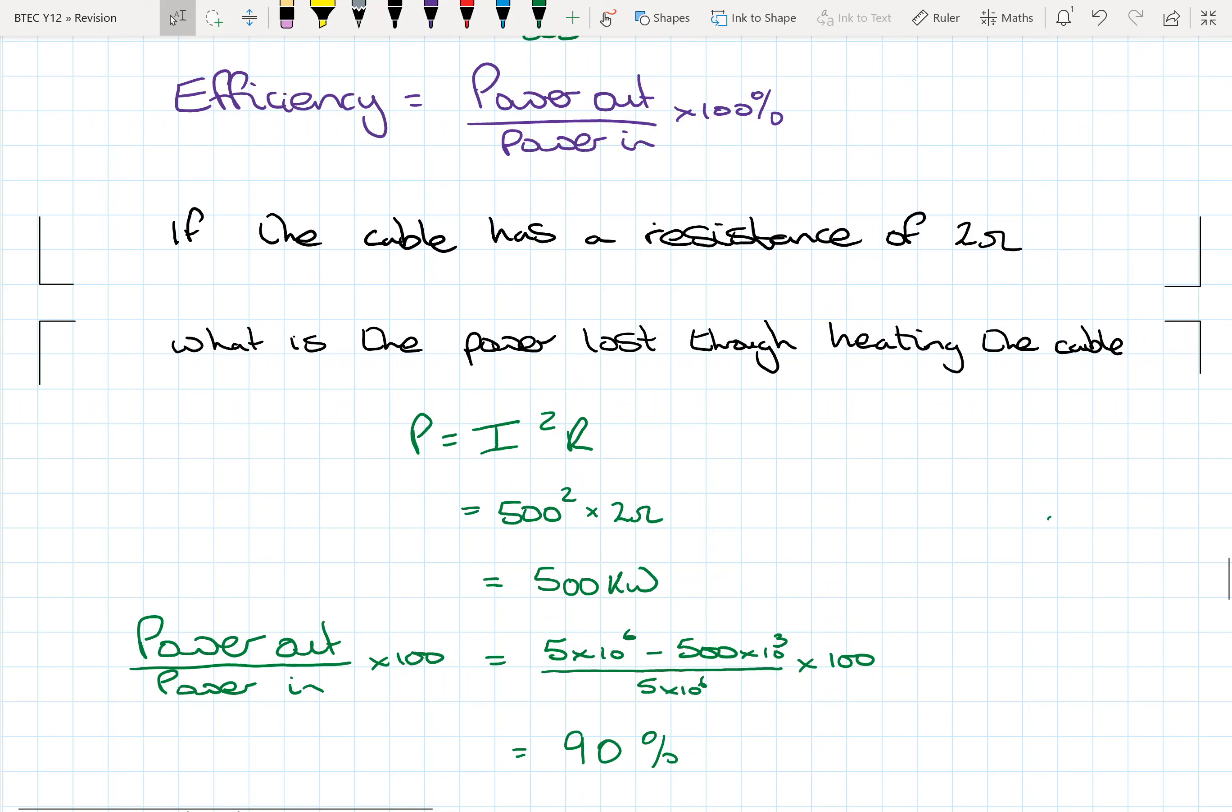And then the power in is what we're generating in the first place. So our power output is what we're generating minus the loss in the cables. And if we bum all that into our calculator, then we should get ourselves that we've got efficiency of 90%. So not too bad, really.